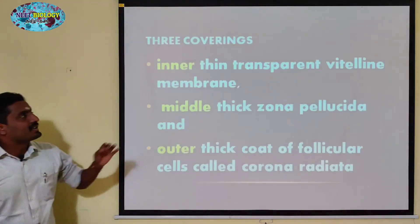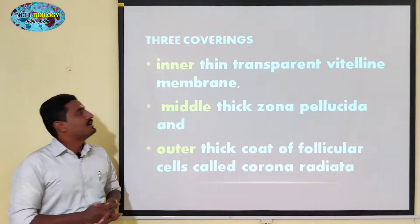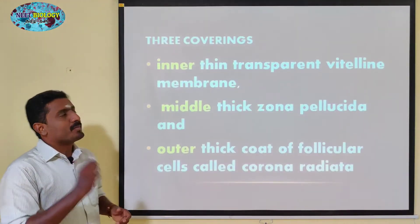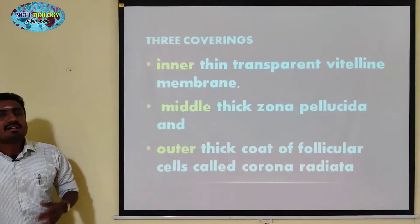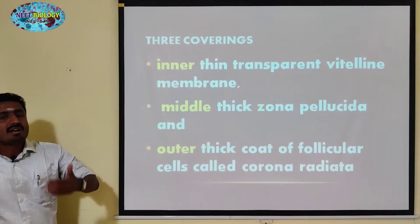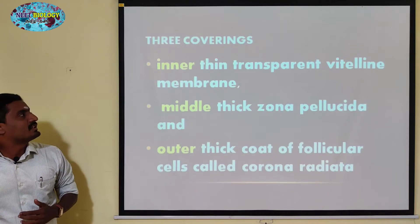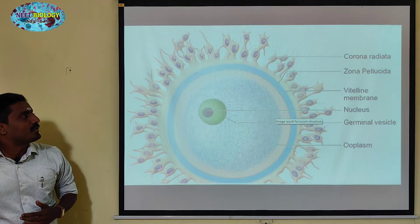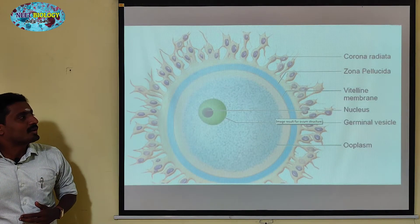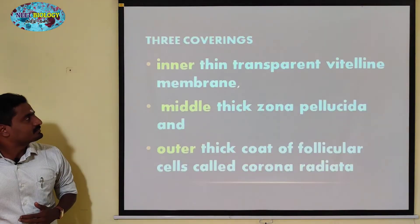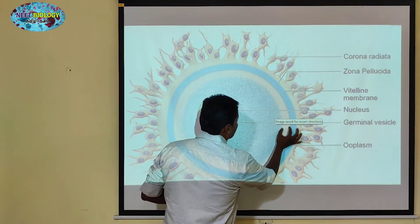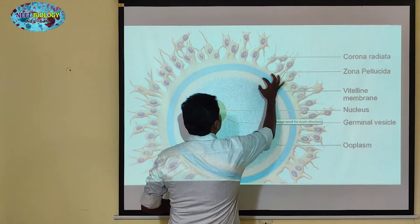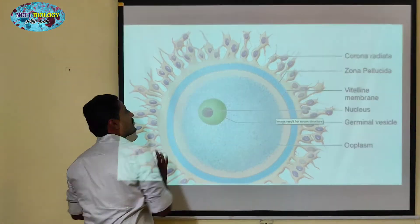There is an inner layer and an outer layer. First of all, the inner layer is a transparent vitelline membrane. Vitelline is a type of protein, and because it is a protein membrane, it is called the vitelline membrane. This is the innermost membrane of the ovum.